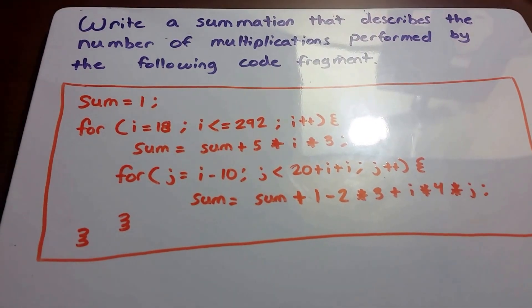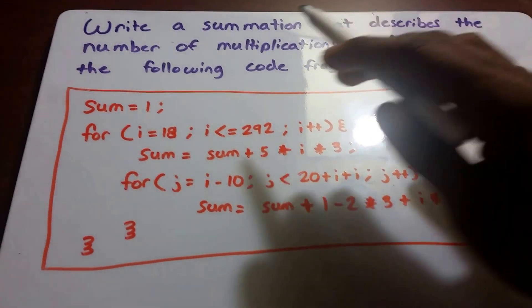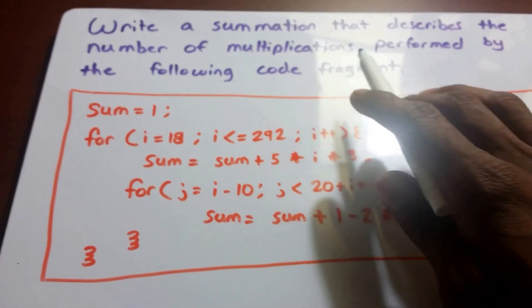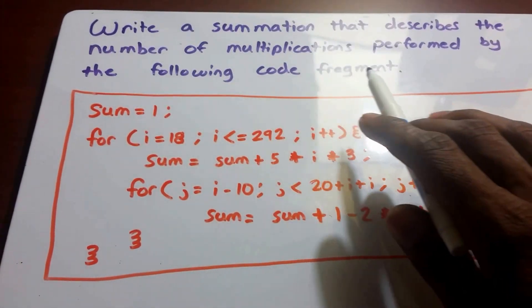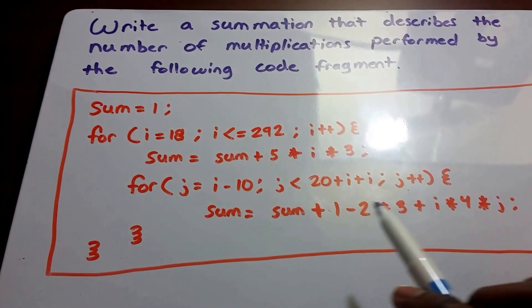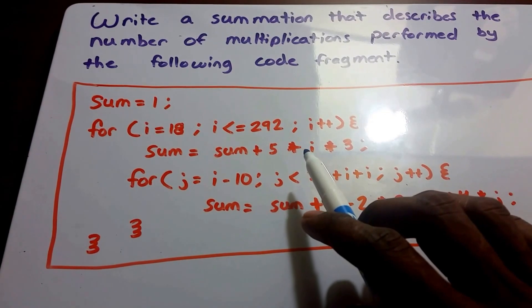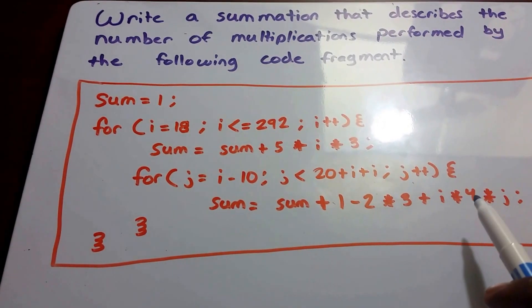Hello guys, and welcome to another video on algorithm analysis. So here we want to write a summation that describes the number of multiplications performed by the following code fragment. And in orange here we have our code fragment. And then you can see the multiplications being performed within our loops.